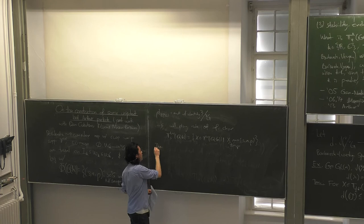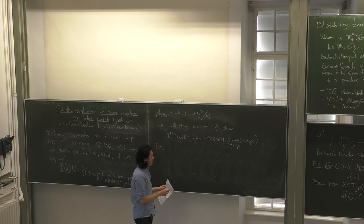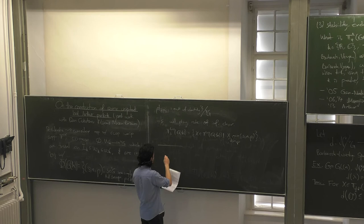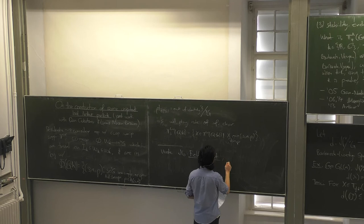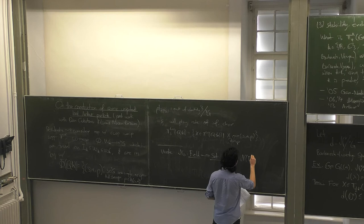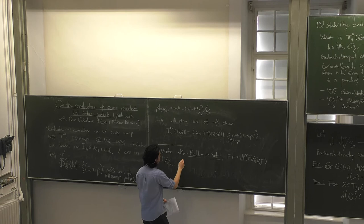We write pi^Lus(s) to be the set of all representations with cuspidal unipotent support with this particular infinitesimal character. Our first approach at doing the p-adic case is doing the naive thing and translating word for word. We need to tell you what the wavefront set is. We need a functor for nilpotent orbits — a functor from the category of fields to the category of sets sending a field F to the nilpotent orbits.